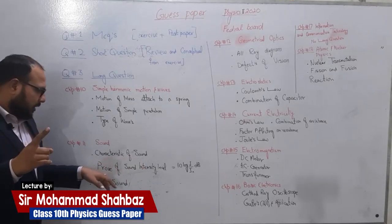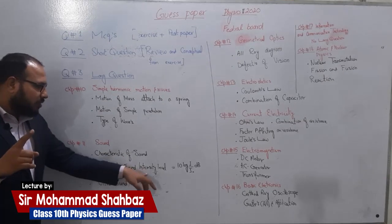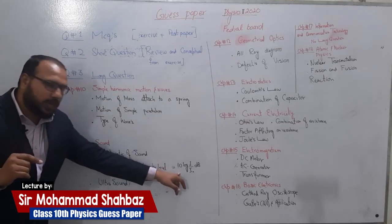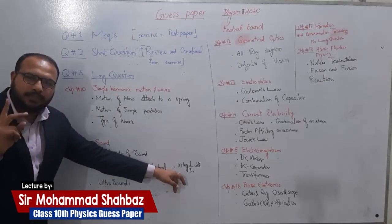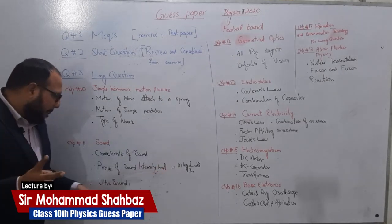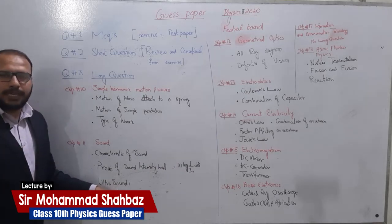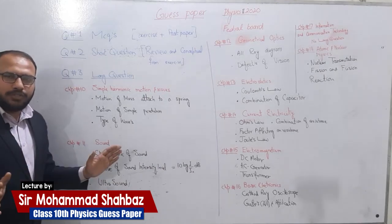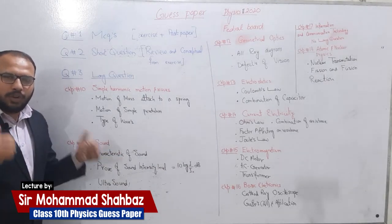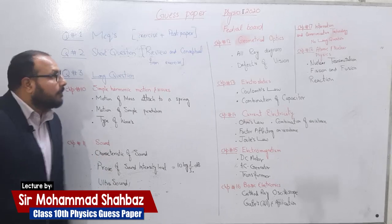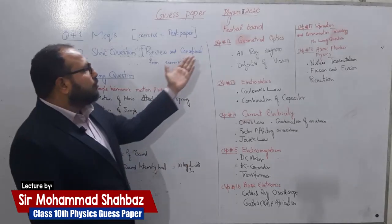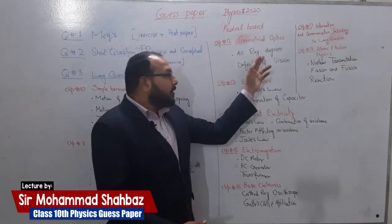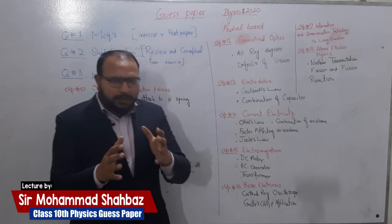Next is Sound. The characteristics of sound include: first, the proof of sound intensity level — 10 log(I/I₀) in decibels; second, ultrasound and its properties; third, your sound chapter is done for long questions. Bravo!